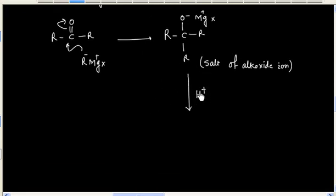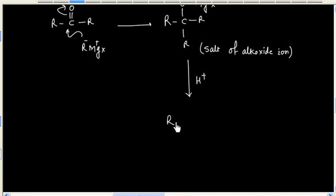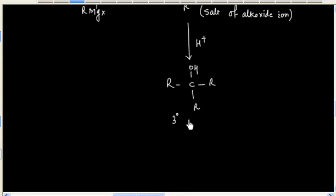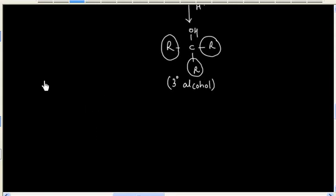If this salt is acidified, we will have a tertiary alcohol. And this tertiary alcohol has 3 same kind of alkyl groups. So important point: this tertiary alcohol has 3 identical alkyl groups.